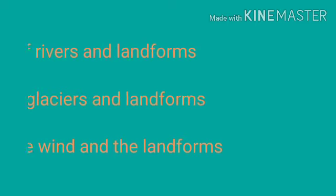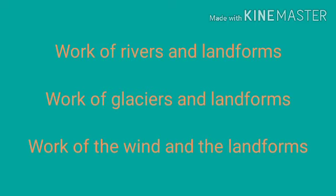In the previous online lecture of the lesson Exogenetic Processes Part 2, in that first lecture, we have learnt about the work of rivers and the landforms created by it, work of glaciers and the landforms created by it, and the work of the wind and the landforms created by it. All these three things we have learnt in the first part of the fourth lesson, Exogenetic Processes Part 2.